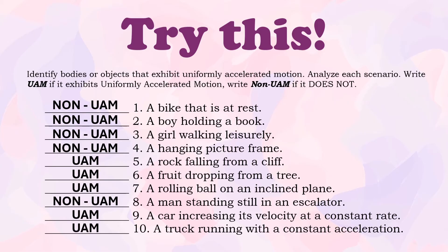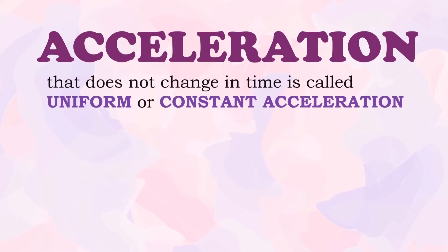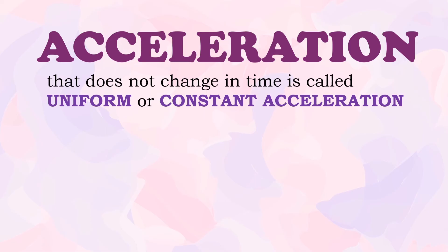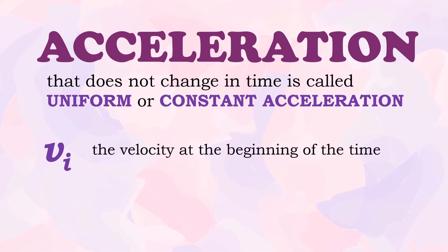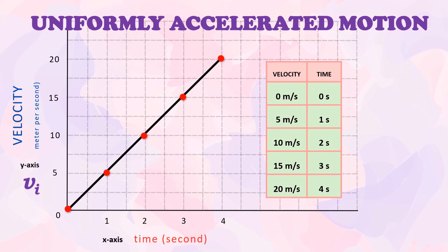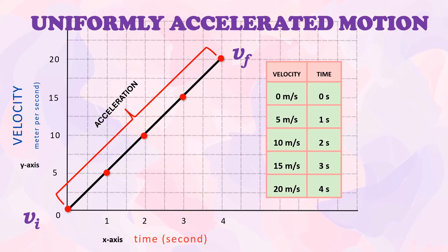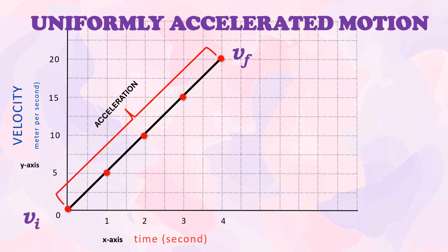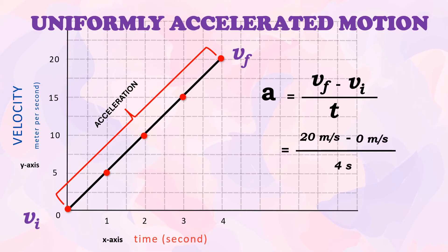Number nine: a car increasing its velocity at a constant rate — uniformly accelerated motion. Number ten: a truck running with a constant acceleration — uniformly accelerated motion. Acceleration that does not change in time is called uniform or constant acceleration. The velocity at the beginning of the time interval is called initial velocity, and the velocity at the end is called the final velocity. In a velocity-time graph for uniform acceleration, the slope of the line is the acceleration.